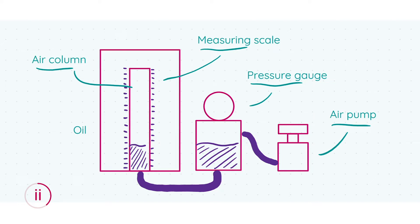Basically, by changing the pressure, the level of oil in the apparatus changes and fluctuates, which means the volume inside also changes. This can be seen by the measuring scale beside the air column, giving us a way of changing the pressure and observing the resultant change in volume, which allows us to show that Boyle's law holds.